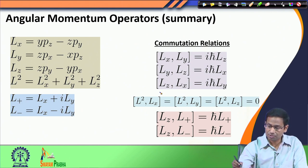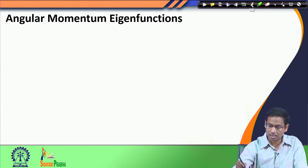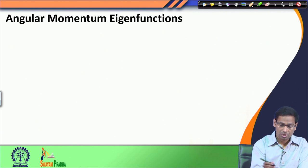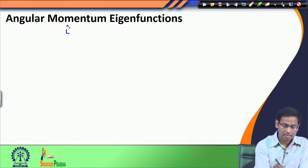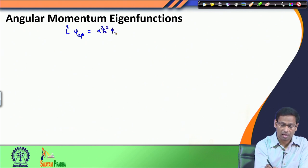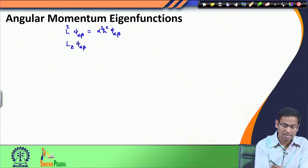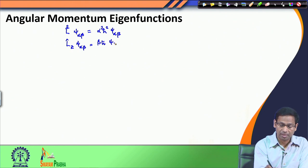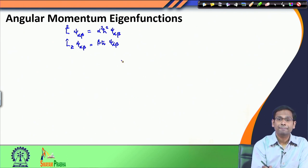I will briefly remind you of the important assumptions from our previous lecture. We defined that psi_alpha_beta is an eigenfunction of the L_square operator with an eigenvalue of alpha-squared h-bar-squared, and the same eigenfunction is also an eigenfunction of the L_z operator but with an eigenvalue of beta h-bar times psi_alpha_beta.